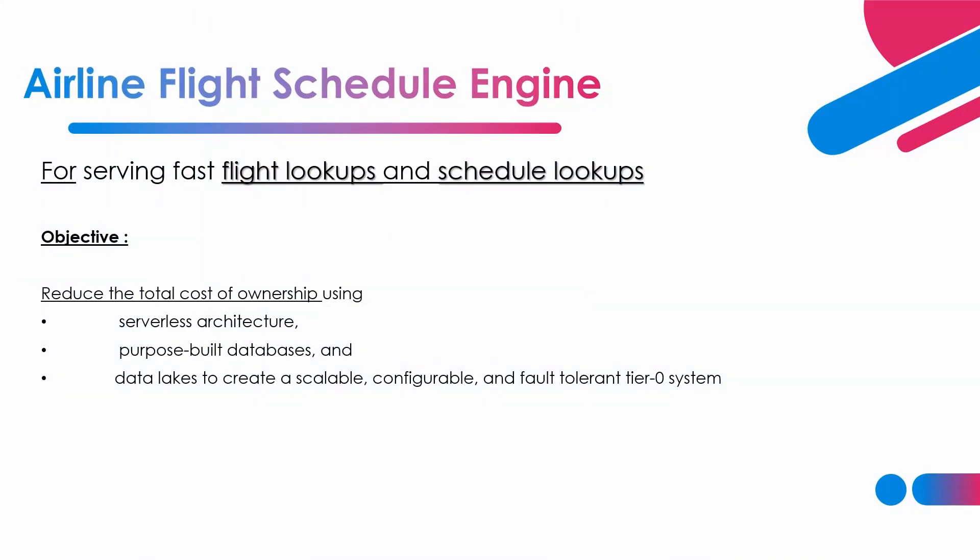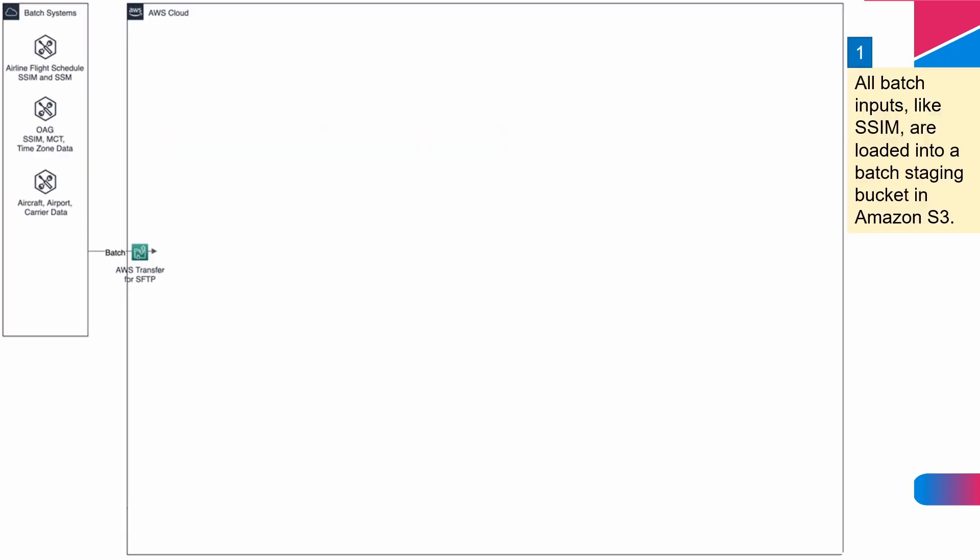We want to build this scheduling engine for fast flight lookup and schedule lookups, while keeping project implementation and operation cost minimal. For that, we want to build a serverless architecture. It should be scalable and configurable for increases in demand, but when the system is underutilized — for example in a pandemic-like situation — it should scale down to save on cost. The scope of this video will be limited to understanding the concepts of the design and the AWS services used. We are not going into coding or hands-on building on the AWS console. If you want me to do that, let me know in the comments section below.